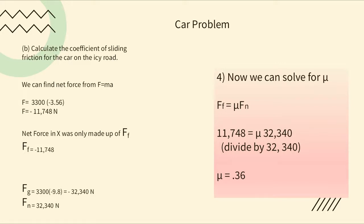Using F = ma with mass 3,300 kg and acceleration −3.56 m/s² from part a: net force = 3300 × −3.56 = −11,748 newtons. Since friction was the only horizontal force, force of friction = −11,748 N. To find fn, we need fg: fg = 3300 × −9.8 = −32,340 newtons. Therefore fn = 32,340 newtons upward.